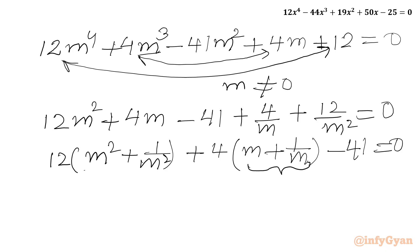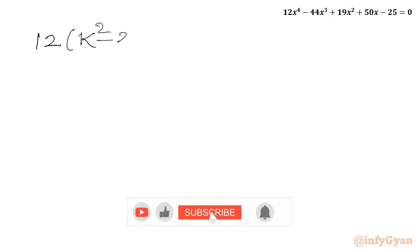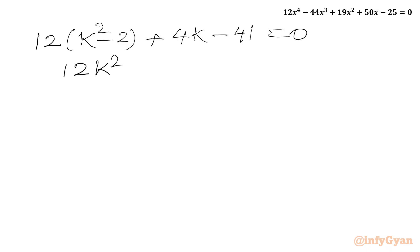Let m + 1/m = K. Then m² + 1/m² = K² − 2 by squaring both sides. Substituting into our equation: 12(K² − 2) + 4K − 41 = 0, which gives 12K² − 24 + 4K − 41 = 0, or 12K² + 4K − 65 = 0. This is a quadratic equation which we can solve by factorization.